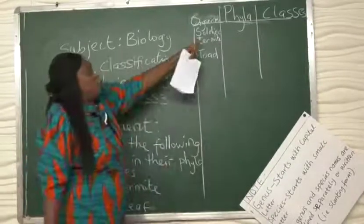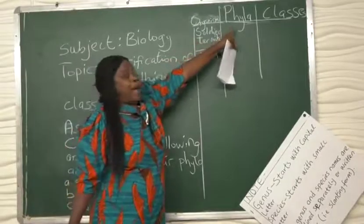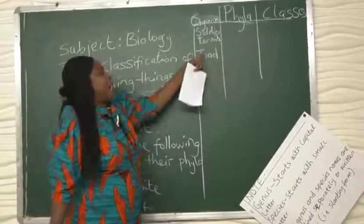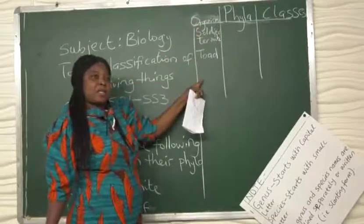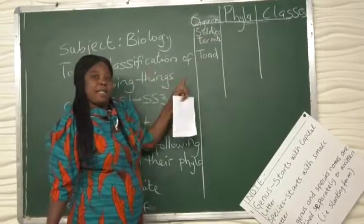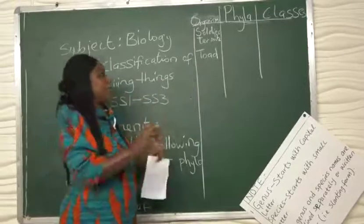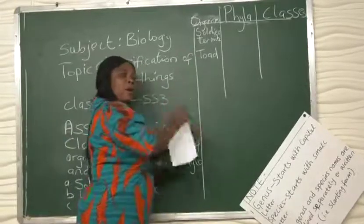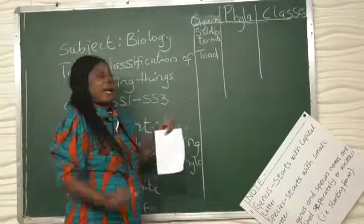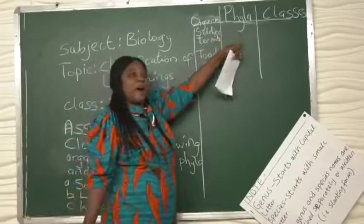If you will use phyla in the tabular form, that means you will have the organisms, at least more than one organism in the column. But some students choose to take one organism after another. If you are taking one organism after another, you will not use phyla, you will use phylum.